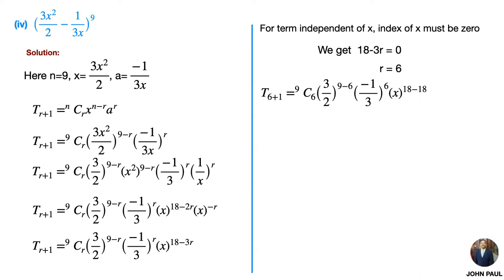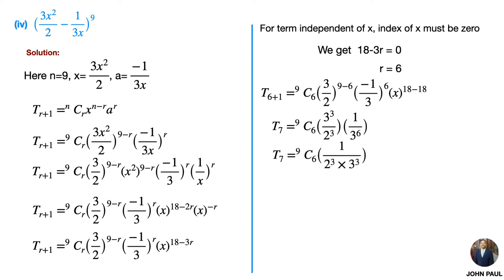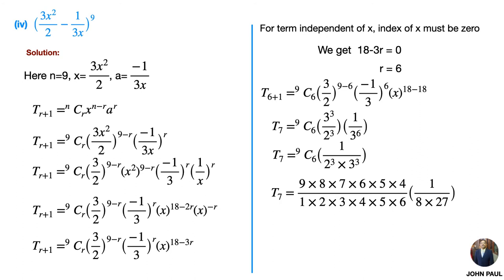Since (−1/3)^6 and 6 is an even number, the minus changes to plus. x^(18−18) = x^0 = 1. Therefore T7 = 9C6 · (3³/2³) · (1/3⁶). We simplify 3³ and 3⁶, giving 9C6 · (1/(2³ · 3³)). After cancelling possible terms we get 7/18. Therefore the term independent of x is 7/18.